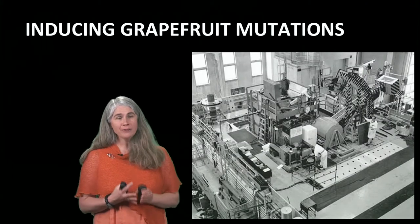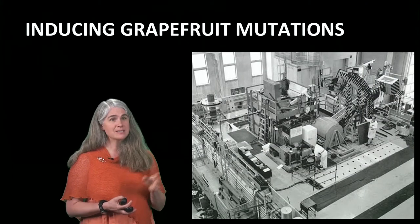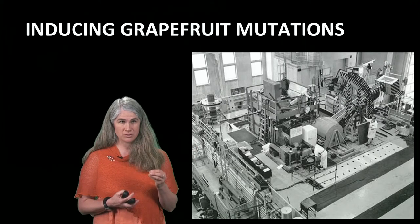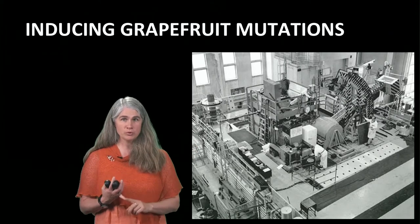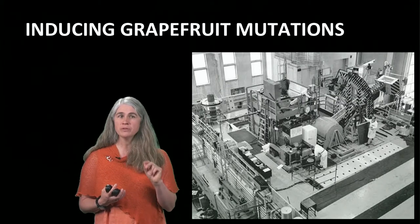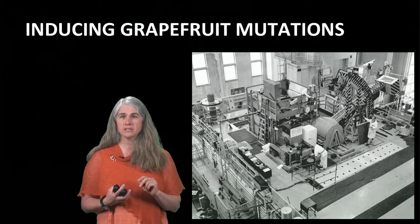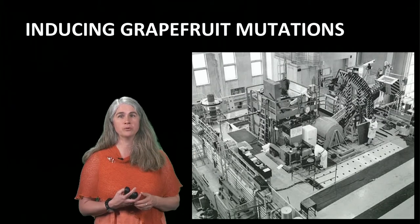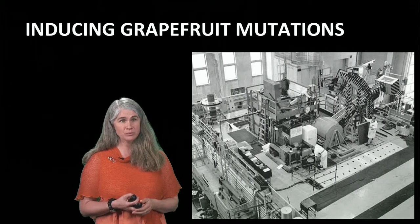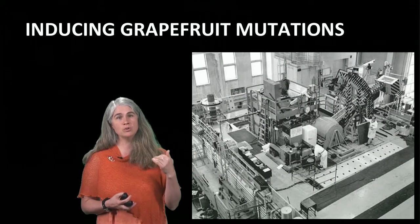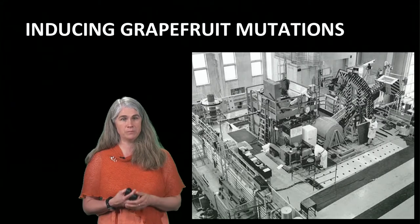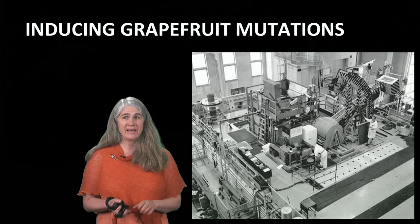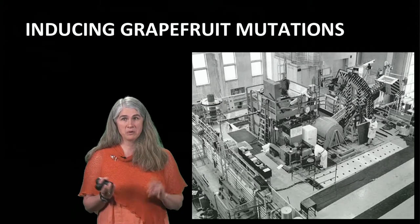In the hunt for red grapefruit, scientists decided in the 1960s to use nuclear reactors to generate neutrons and X-rays and radiate two different kinds of plant tissues — seeds and budwood. Here is the nuclear reactor at Brookhaven National Laboratory that was used to irradiate the grapefruit plants. The irradiation event itself is fast — seconds, minutes, hours.